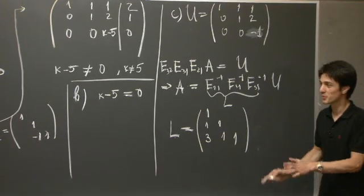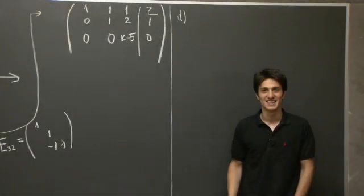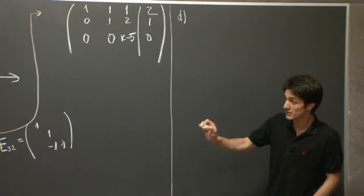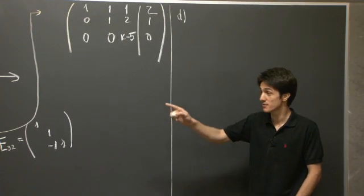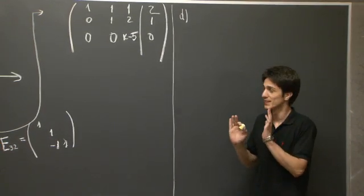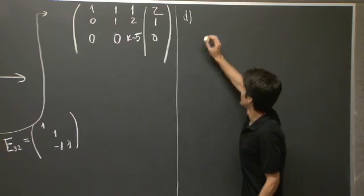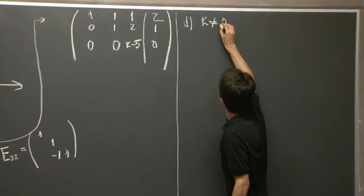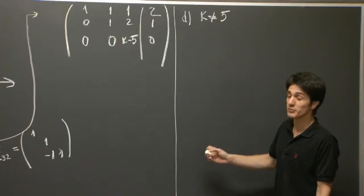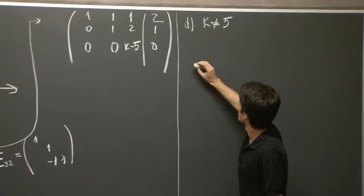So give me a few moments to erase the board, and then I'll do part 4. OK, we're back, and we're going to do part D now. OK, so we need to find the complete solution of the system for all k. And we saw that for k equal to 5, the system had many, many solutions. And for k not equal to 5, it had only one. OK, so first let's look at the case k not equal to 5 when the matrix A was invertible. Well, it's not hard to see what the solution of the system then is.